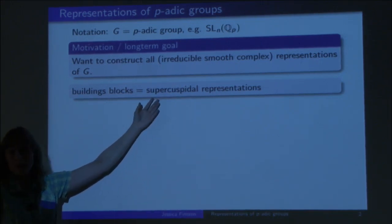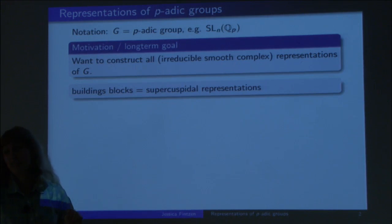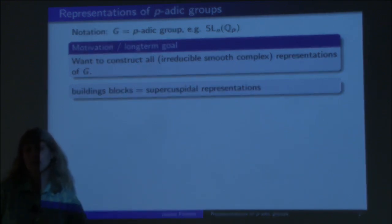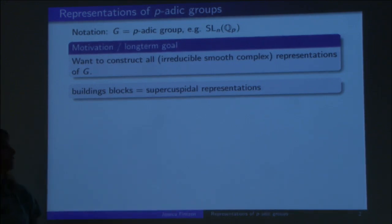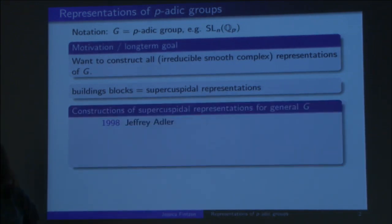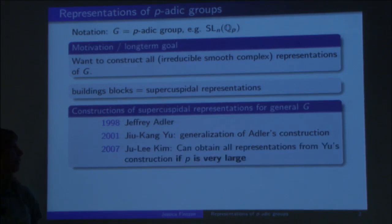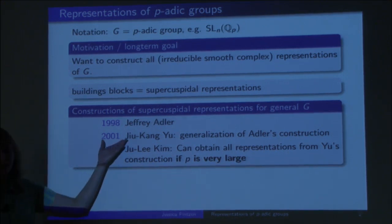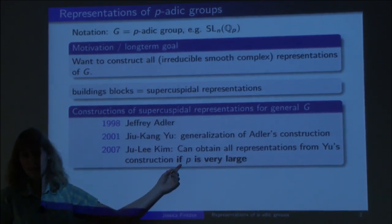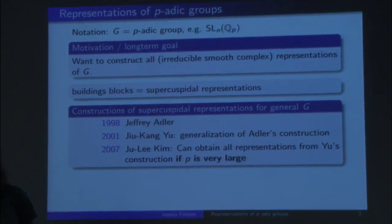What we really want to know is how to get these supercuspidal representations. The problem is they are really mysterious. For GL_N, we know the story thanks to the work of many mathematicians during the last half century. But for general groups, much less is known. In 1998, the first construction for general groups beyond GL_N was given by Jeff Adler. Three years later, JKU generalized this construction vastly, so that in 2007, Ju-Lee Kim — who is also here at the IES — showed that Yu's construction gives all representations, but with the caveat that the prime P must be very large.